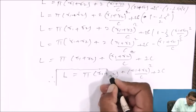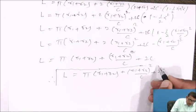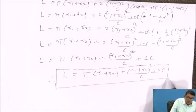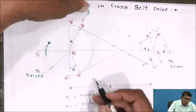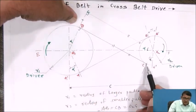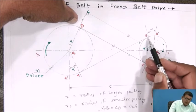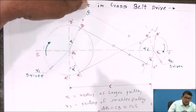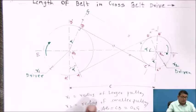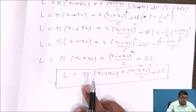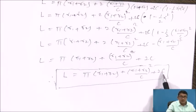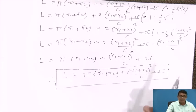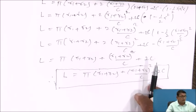Therefore, the length of the cross belt L is equal to π(R1 + R2) + (R1 + R2)²/c + 2c. This is the formula to calculate the exact length of the cross belt drive.